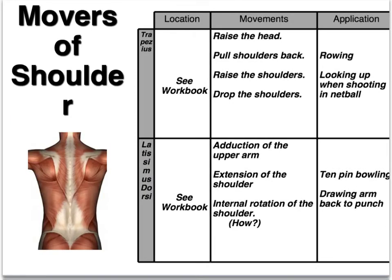Here we're looking at movers of the shoulder. The prime movers of the shoulder are the trapezius. This is a rear view of a person. The trapezius is on our back at the top, and the latissimus dorsi on the side. The trapezius helps raise the head, pull the shoulders back, and raise and drop the shoulders.